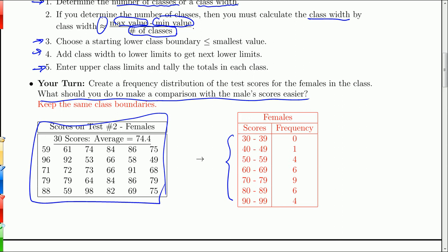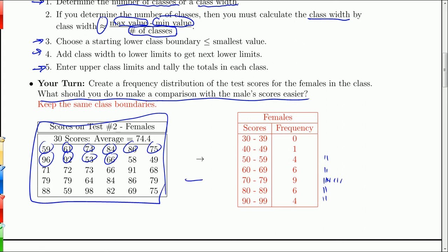Here's actually the way I do it. I go through and say: look at that 59 — that's going to give me 1 in this category. Look at that 61 — 1 in this category. That 74 — 1 in this category. 84 — 1 in this category. 86 — another one. 75 — another one there. 96 — one up here. 92 — another one there. 53. And you go on and on. You start tallying these things up, and at the end you'll have a total count. The stevenstats.com demonstrates how software can do this.